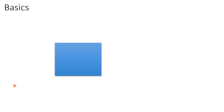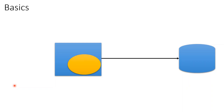Let's understand the basics. For example, we have an application which calls a database and retrieves details from it. It's often static data that we are retrieving. So it makes sense to implement a cache and store the data. Here we have a key as 'currency' and value as 'AUD' — a key-value pair. It also has attributes like the time when it's cached and the time when it expires, called time to live. In this case it lives for two hours, so once cached at the 11th hour, it expires at the 13th hour.